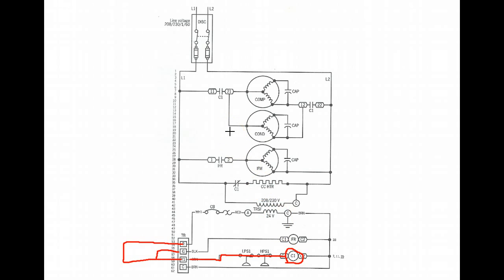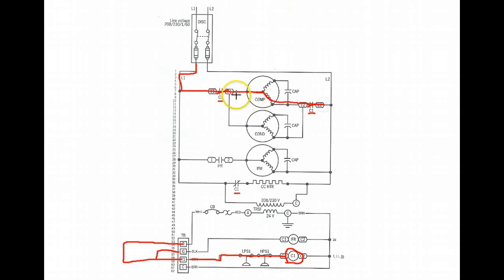Now go up to the high voltage side of the circuit and look for the C1 contacts. These three contacts are at rest with no call for cooling and the contactor de-energized. When 24 volts is applied to the C1 solenoid, the normally open contacts close, allowing current to flow through the compressor and applying voltage to the condenser fan — so they will be running. The normally closed contact opens up, removing power from the crankcase heater, so the crankcase heater is turned off.